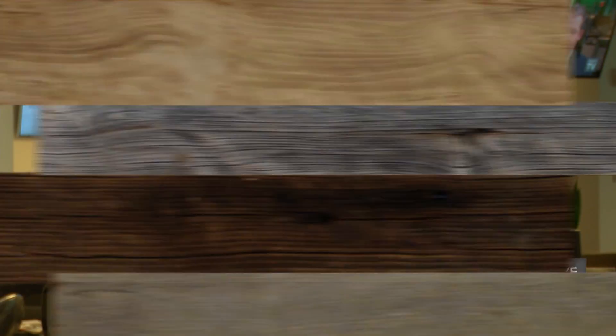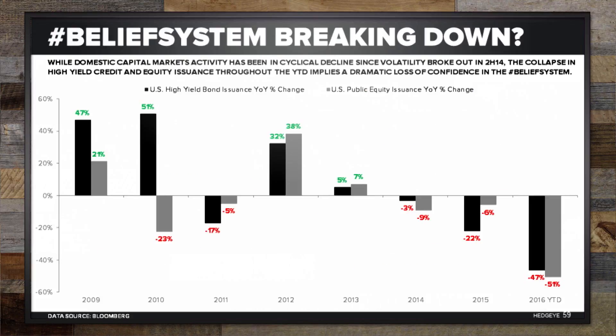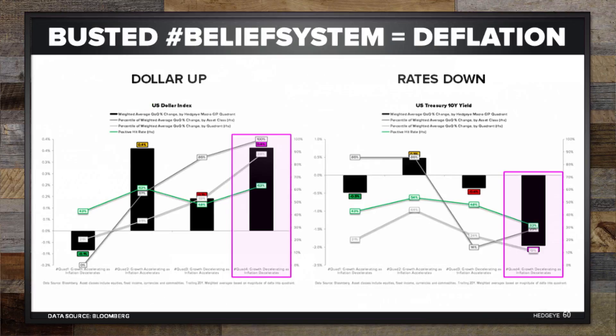This happens every time in the fourth quadrant. When we go from Quad 3 to Quad 1, that's very deflationary — the dollar goes up and rates go down. I believe it's on slide 59 and 60. You see the dollar up, rates down. That's the fourth quadrant.